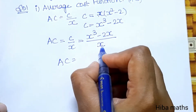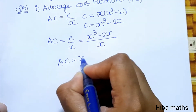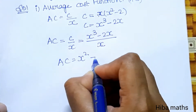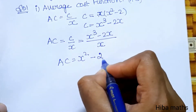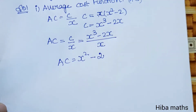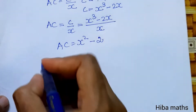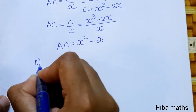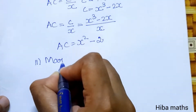Dividing: x³/x = x², and 2x/x = 2. So AC = x² - 2. Next is the marginal cost function.